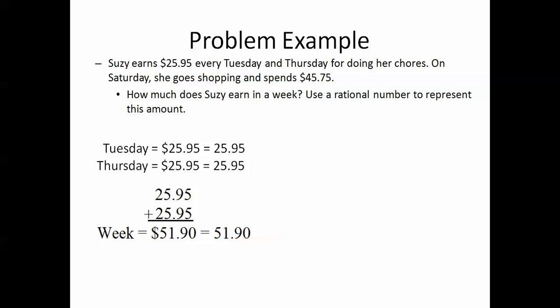So we add $25.95 together and $25.95 together, and in the week, we get $51.90. And represented as a rational number, we get rid of the dollar signs. So, $51.90 is the second part of our answer. And, with word problems, we must use a sentence to answer our questions. Suzy earns $51.90 in a week. This number can be represented by $51.90.